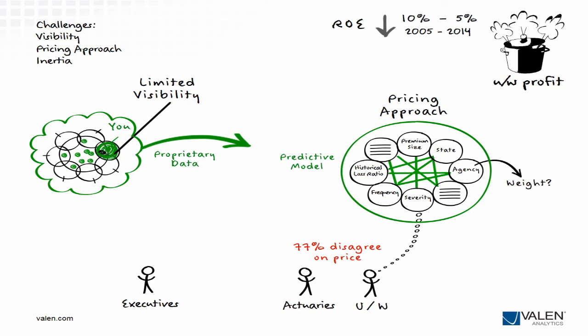What about the skeptics maintaining internal inertia or the arguments over price? The data helps you here too. Our studies show that underwriter performance can be three times more effective when they incorporate predictive analytics into their decision-making. Given all this pressure to deliver underwriting profits, you need to deliver results. When you team up with Valen, we'll focus on what matters to you. Our clients embrace analytics and use it as a key tool to become more data-driven, sophisticated competitors.